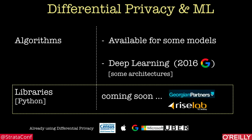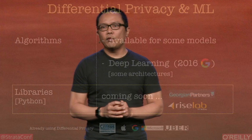One technique that is really close to being accessible to average data scientists is differential privacy. A lot of the libraries that are coming out don't necessarily address all of the models you want to use, but they should address enough of the basic models, including deep learning. Many of the tools that are emerging are accessible to anyone familiar with, for example, scikit-learn or TensorFlow. Chang Liu of Georgian Partners will be giving a session at this conference where she'll announce a new tool that will make it possible for average data scientists to build differentially private models.